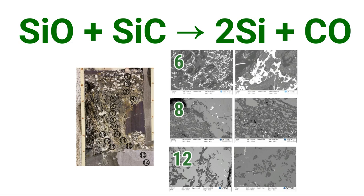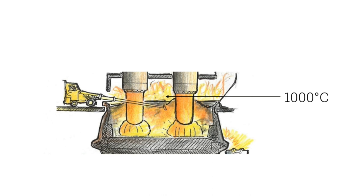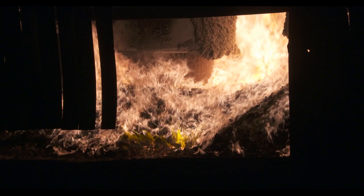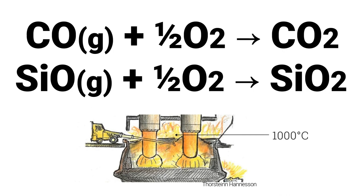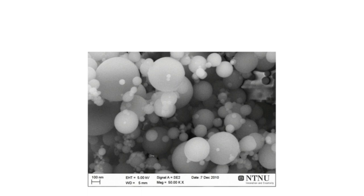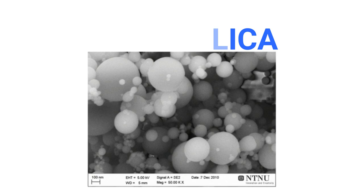Some silicon can also be produced in the silicon carbide particles higher up in the furnace, as shown in the micrographs from a pilot scale furnace experiment. As the carbon monoxide and the remaining silicon monoxide gas leave the furnace, they will combine with air at the top of the furnace. The carbon monoxide and silicon monoxide gases will oxidise into carbon dioxide gas and silicon dioxide microparticles called microsilica.